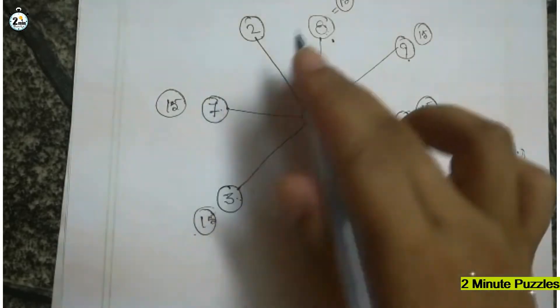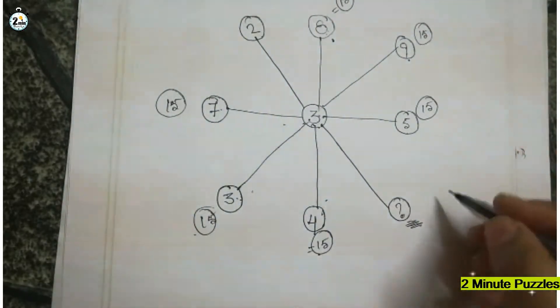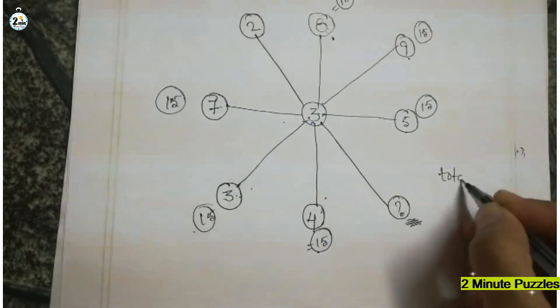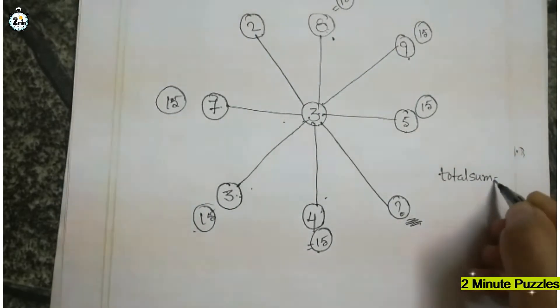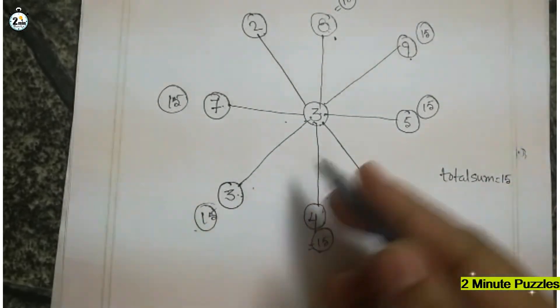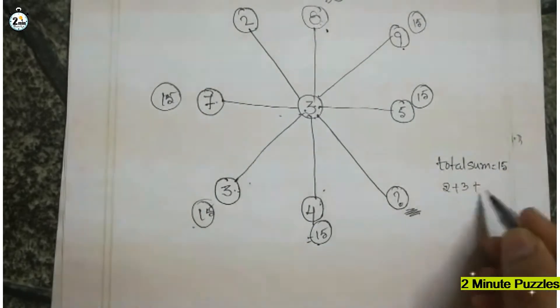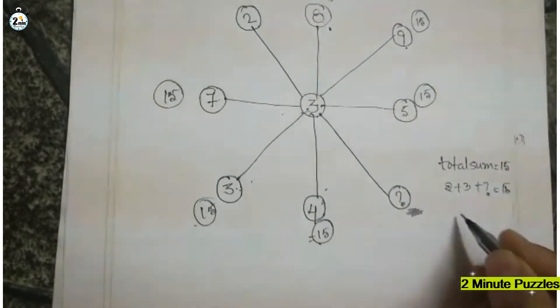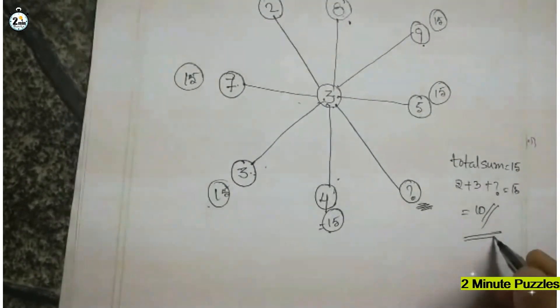So the total sum is the same. We have to get the total sum as 15. They have already given us two numbers: 2 plus 3 plus what gives you 15? So the answer is 10.